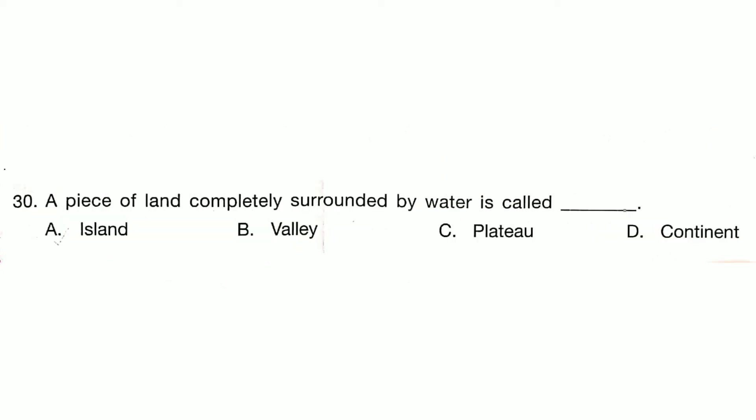A piece of land completely surrounded by water is called an Island. Answer is Option A.